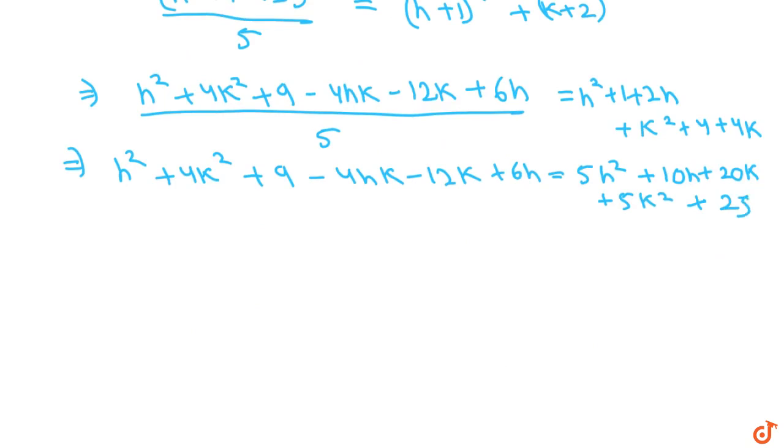Then if we bring all the terms together, h² terms together we'll get 4h², k² terms together we'll get plus k², then the hk term, only one here, so plus 4hk.